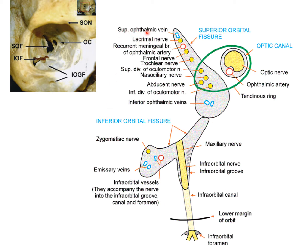The annular tendinous ring divides the superior orbital fissure into compartments. Structures passing above the annular tendinous ring include the superior ophthalmic vein, the lacrimal and frontal divisions of the ophthalmic nerve, the recurrent meningeal nerve, the recurrent meningeal branch of the ophthalmic artery, and the trochlear nerve. Structures passing through the annular tendinous ring include the superior and inferior divisions of the oculomotor nerve, the nasociliary division of the ophthalmic nerve, and the abducens nerve. Below the ring passes the inferior ophthalmic vein.